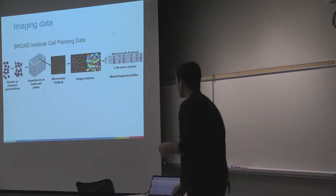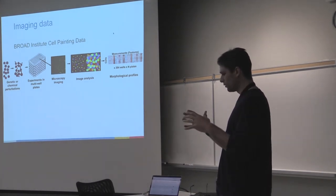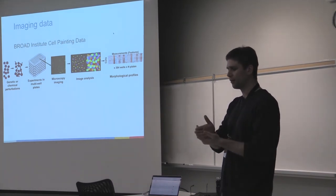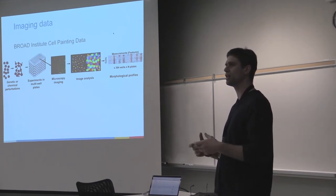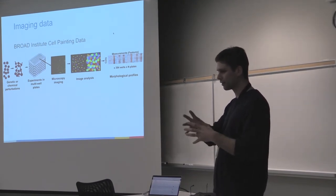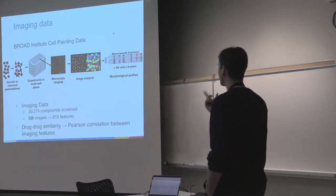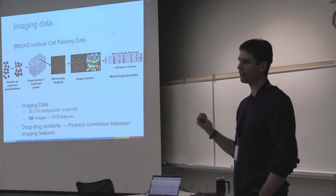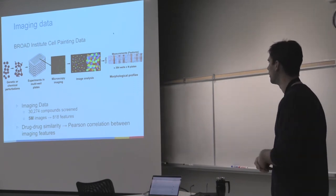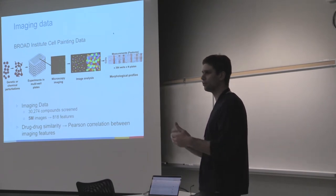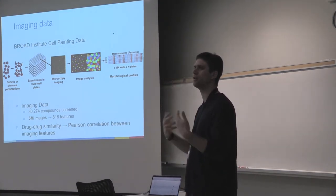The Broad Institute — they are unfortunately the only ones who can do very large-scale experiments — did exactly like CMAP but with microscopy-based images of cell lines before and after treatment. They're trying to understand what changes from a phenotypic perspective: are cells getting smaller or bigger, changing shape, interacting differently? There are 30,000 compounds and five million images. The problem is the data are currently summarized with about 800 features, a very crude way of analyzing images, especially in this deep learning era. We're investigating whether we can download those images and do more sophisticated image analysis.